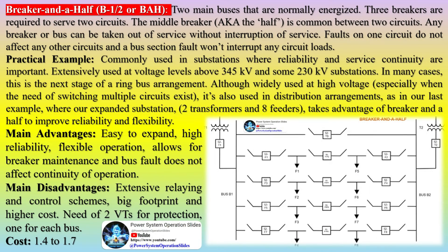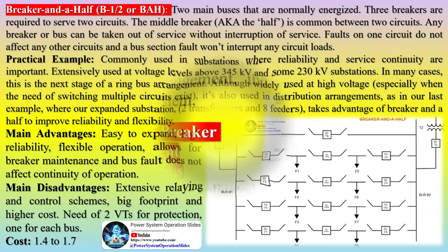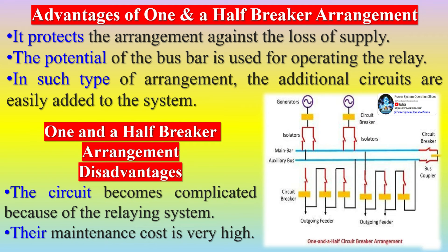Advantages of the one and a half breaker arrangement: it protects against loss of supply; the potential of the busbar is used for operating the relay; and additional circuits are easily added to the system. Disadvantages: the circuit becomes complicated because of the relaying system, and maintenance cost is very high.